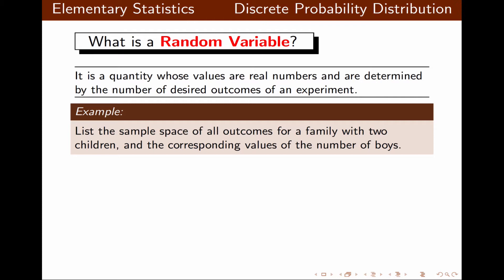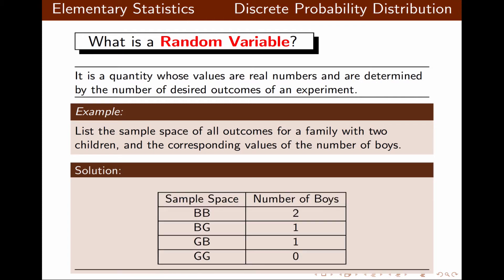Consider a family with two kids. We want to list the sample space of all possible outcomes and the corresponding values of the number of boys. So a family with two kids can have boy-boy, boy-girl, girl-boy, and girl-girl. For boy-boy, the number of boys is two; boy-girl, there is one boy; girl-boy, there is one boy; and girl-girl, there are no boys, so the number of boys will be zero.